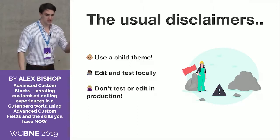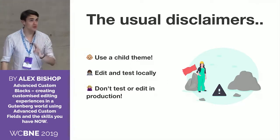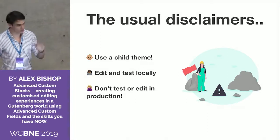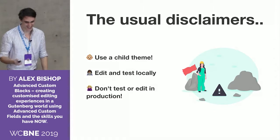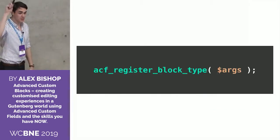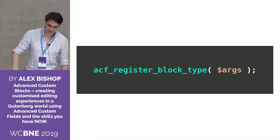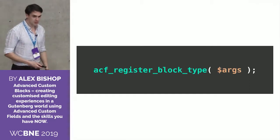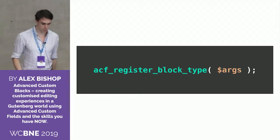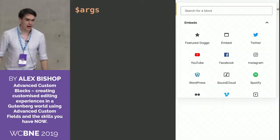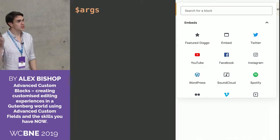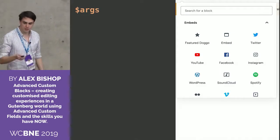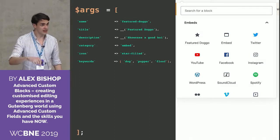All right, should we get into it? I will not be sacrificing to the live coding gods today — so we're just going to have a lot of code on screen. The usual disclaimers: if you're making edits, use a child theme, edit and test locally. Do not test or make changes in production until you're sure — better yet, have a testing and deployment process. So it all comes down to this one function, introduced in ACF 5.8, called acf_register_block_type. It takes an associative array of arguments that define how our block behaves. On the left we have the arguments, and on the right is the block selector in the block editor.